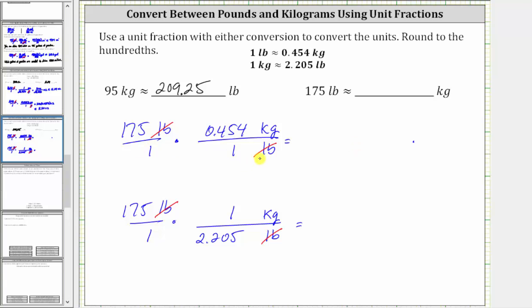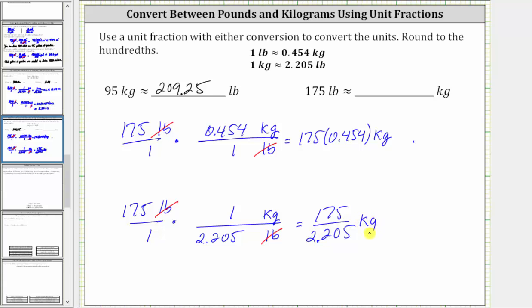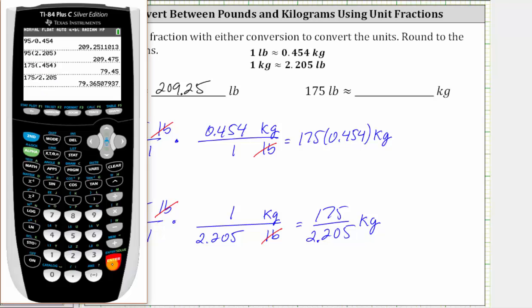In this first product, notice how we have a denominator of one, and therefore we just have 175 times 0.454, and the units are now kilograms. For the second product, we will have a quotient: 175 divided by 2.205, and the units are kilograms. Let's go back to the calculator and determine this product and quotient, rounding to the hundredths place value. For the product, we have 79.45 kilograms, and for the quotient, we have approximately 79.37 kilograms.